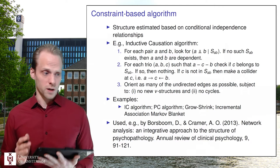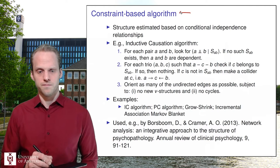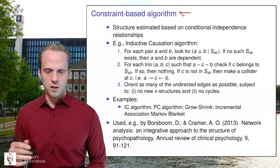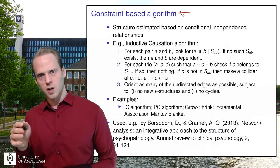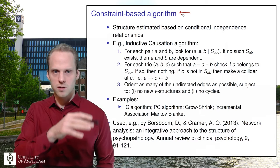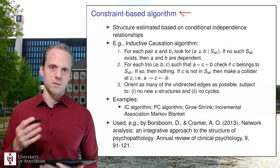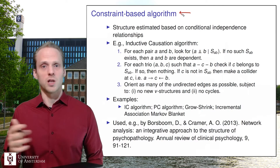The other class — constraint-based algorithms — is more advanced. Instead of looking at the whole picture, these algorithms look at every possible combination of variables and every possible edge, building up a picture by doing many small hypothesis-driven tests: is this a correlation or not? Is this a partial correlation or not? This gives a lot of insight at a detailed level and is better at supporting causal interpretation because you check all conditional dependence relationships.